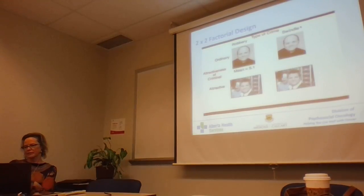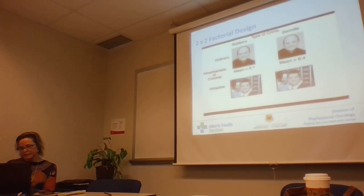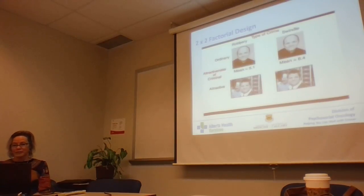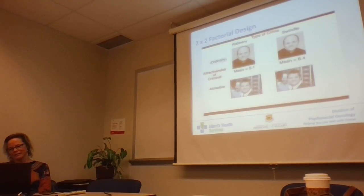The main effect of crime type: collapsing across attractiveness, robbery averages to 3.7 months and swindle averages to 8.5 months — clearly swindlers get more time. These outer means are called main effects. But if you just look at main effects and don't plot the data, you miss the interaction. Plotting the results — type of crime on the x-axis, sentence length on the y-axis, with separate lines for attractive versus ordinary — reveals that for robbery, ordinary people get longer sentences, but for swindle, attractive people get the longest sentences.